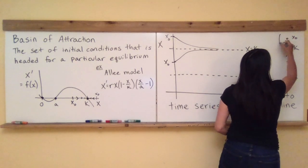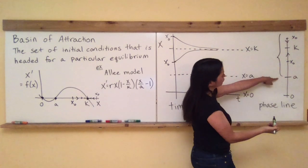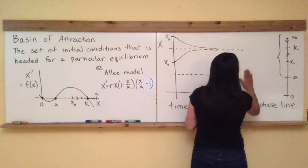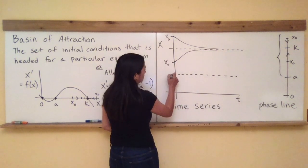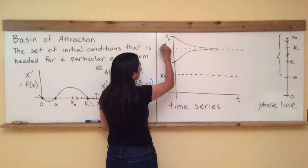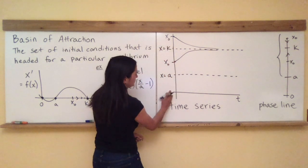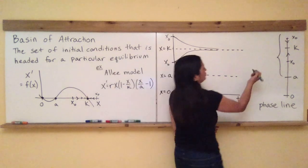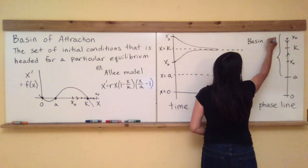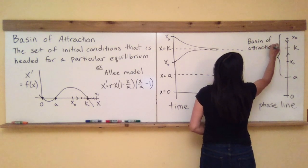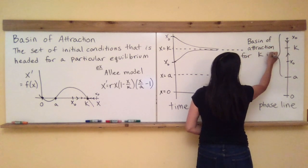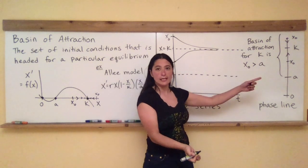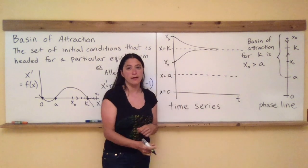So we define this whole area — all initial conditions greater than a — as the basin of attraction for the carrying capacity k. The fixed points are x equals k, x equals a, and x equals zero, which represents extinction. The basin of attraction for k is all initial conditions greater than a. That's all it means — anything you start with that's greater than a is going to head towards k.